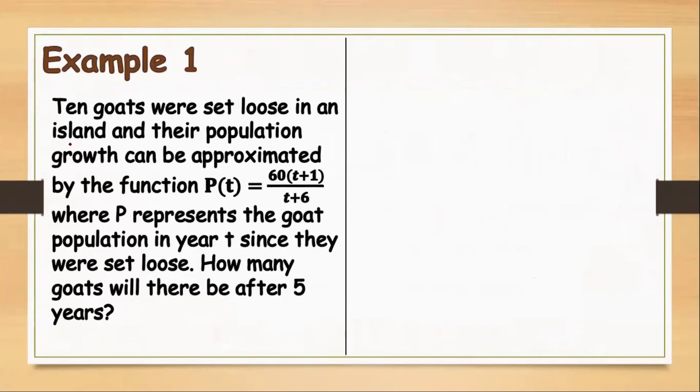So we have here our first example. 10 goats were set loose in an island and their population growth can be approximated by the function P(T) equals 6T times (T plus 1) all over (T plus 6), where P represents the goat population in year T since they were set loose. How many goats will there be after 5 years?